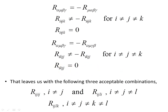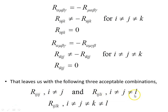This leaves us with three acceptable combinations: R_ijij where i does not equal j; R_ijli where i does not equal j does not equal l; and finally where all four indices are different — R_ijlk where none of the indices equal each other.